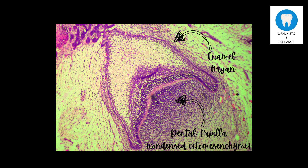The cap stage is the second stage of tooth development. The tooth bud grows non-uniformly, and the growth is more in certain areas and less in others. This stage is called the cap stage, as the epithelial outgrowth resembles a cap sitting on top of the condensed ectomesenchyme, the dental papilla.